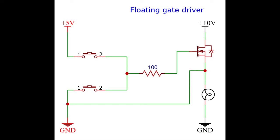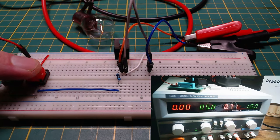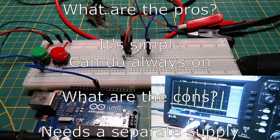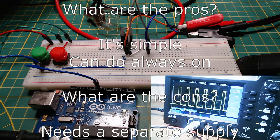Number 7: Floating gate driver. This is a floating gate driver. It works by using an isolated supply for signaling and driving, and connecting its ground to the MOSFET's source pin. It can do manual signaling and also PWM. Pros: it's simple, can do always on. Cons: needs a separate supply.